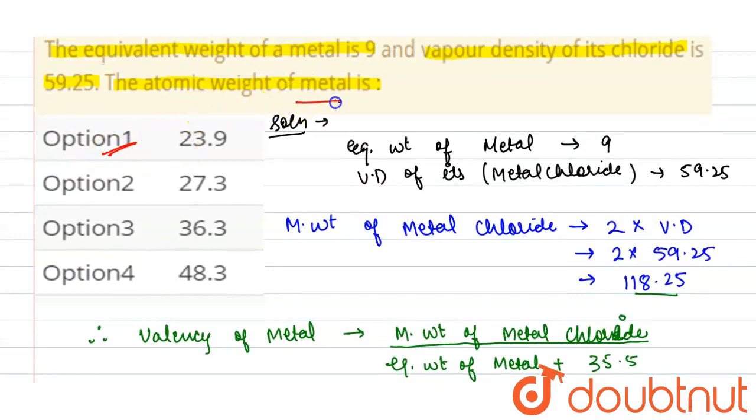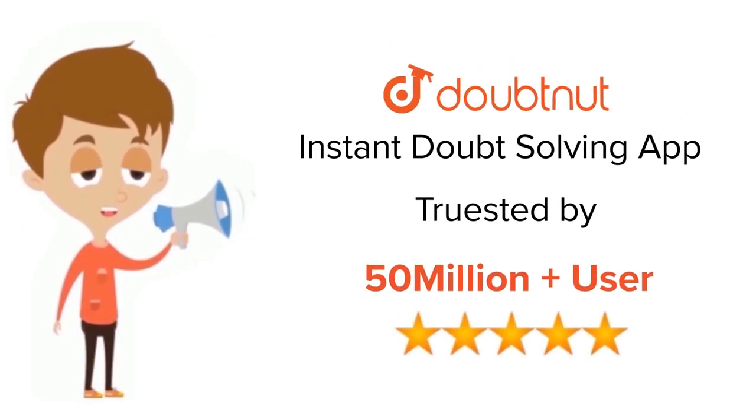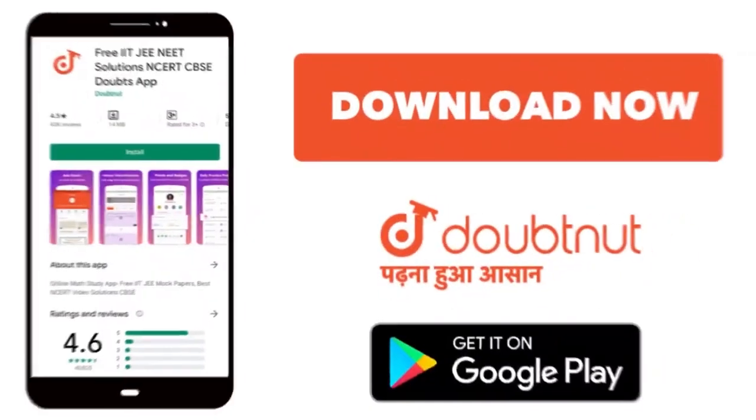That is atomic weight of metal is 23.9 gram. Thank you. For class 6 to 12, IIT-JEE and NEET level, trusted by more than 5 crore students, download Doubtnit app today.